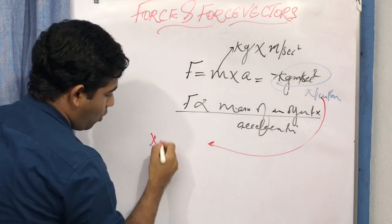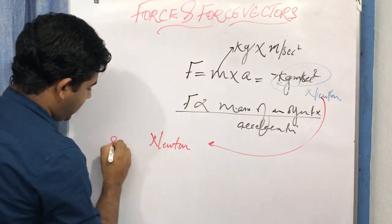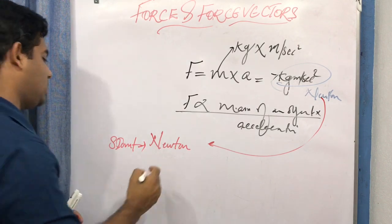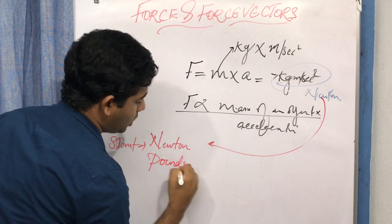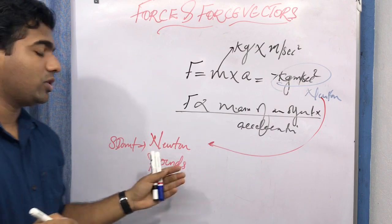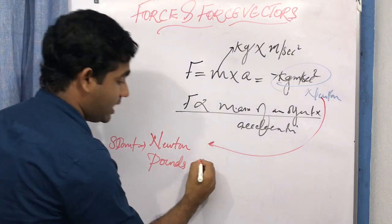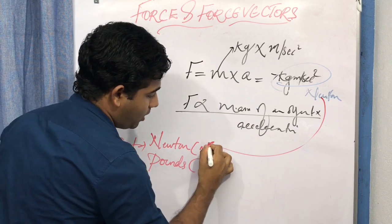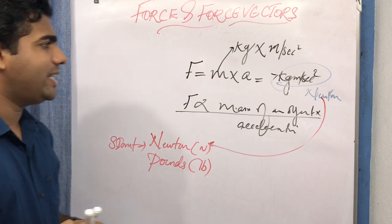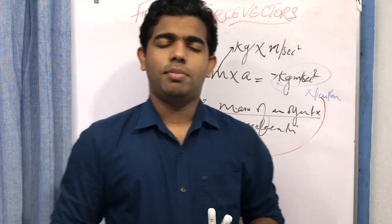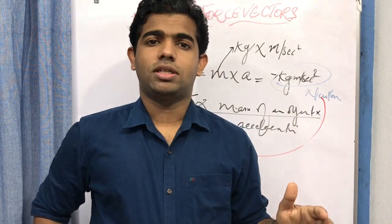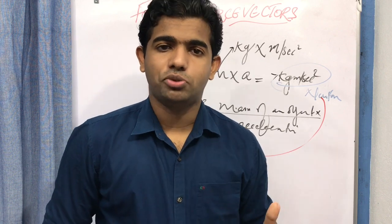In biomechanics we use the SI unit of force, which is the Newton, denoted by capital N. In the other system it is also known as pounds, denoted by 'lb'. Now, what is the weight of an object? These are things you might come across in your gait parameters chapter and you need to understand what you are dealing with.